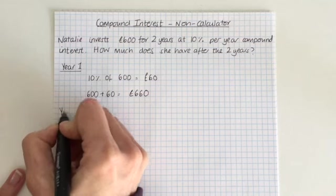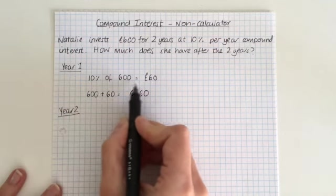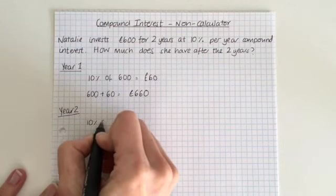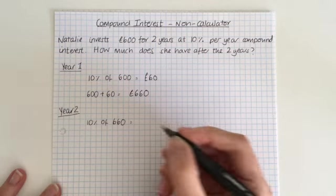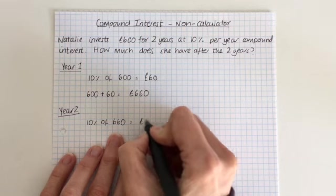So for year two now, we have to find 10% of what she's got at the end of year one. So we're going to find 10% of £660. So divide it by 10. So it's £66.